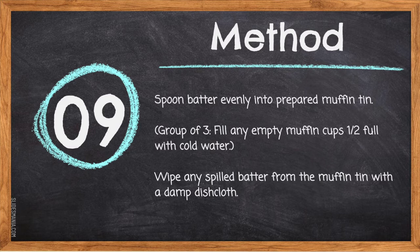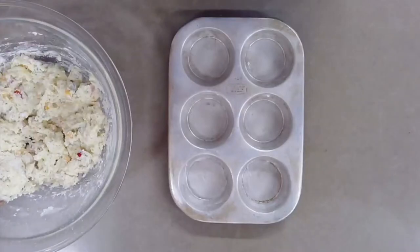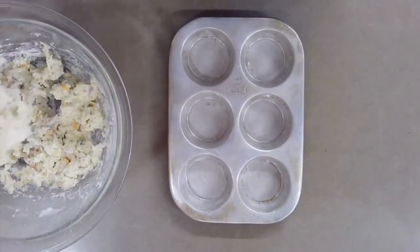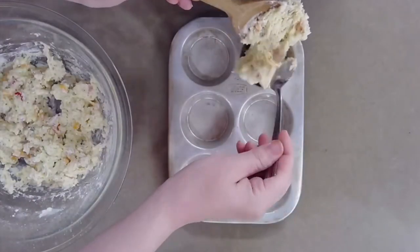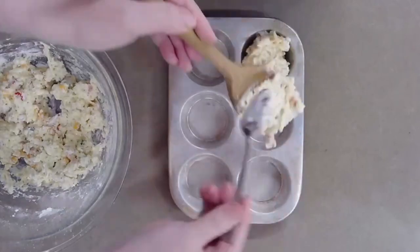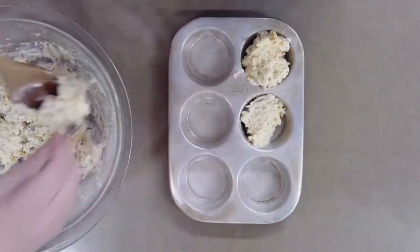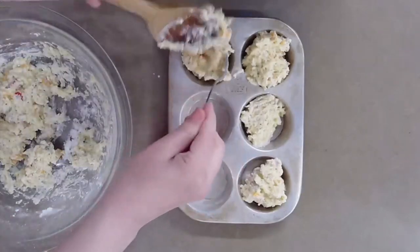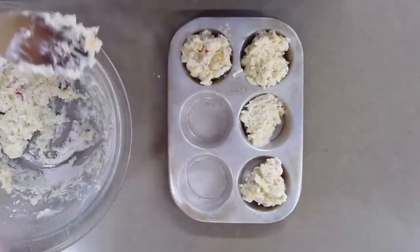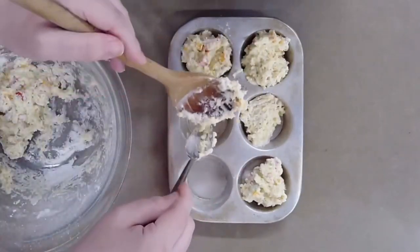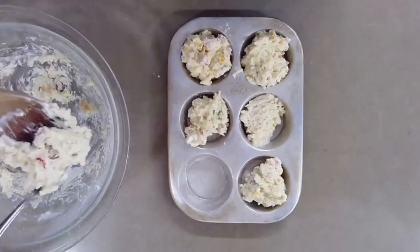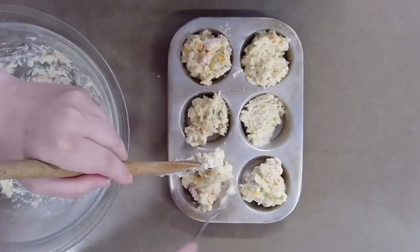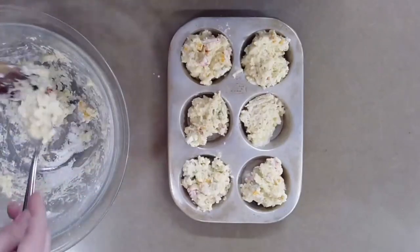Step nine: spoon batter evenly into the prepared muffin tin in groups of three. Fill any empty muffin cups half full with cold water. Wipe any spilled batter from the muffin tin with a damp dish cloth. Use two spoons to help drop the batter into the prepared muffin tin. It is important that each muffin contains the same amount of batter so they bake evenly and none are overdone or underdone.